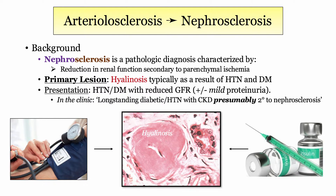What causes this condition? Most commonly, hypertension and diabetes. There will be a reduction in mass and function, characterized by elevation of creatinine or a decreased GFR. So we'll have a long-standing hypertensive or diabetic with mild chronic kidney disease, and the basis for that finding is either arteriolosclerosis or arteriolar hyalinosis — the terms are used interchangeably. Please note, in the clinic, this is a presumptive diagnosis, as we don't biopsy these patients.